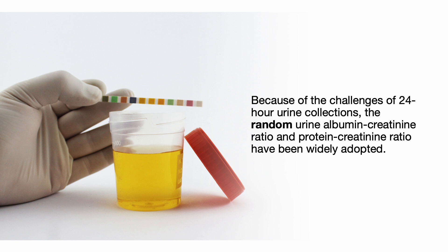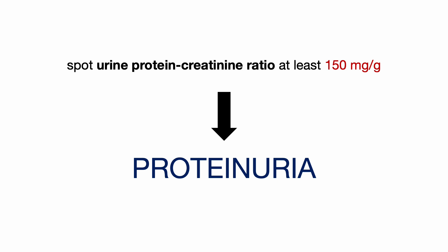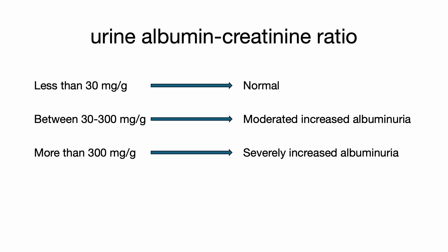Because of the challenges of 24-hour urine collections, the random or spot urine albumin creatinine ratio and protein creatinine ratio have been widely adopted. Proteinuria is defined as a spot urine protein creatinine ratio of at least 150. A spot urine albumin creatinine ratio of less than 30 is normal; 30 to 300 is moderately increased albuminuria, and more than 300 is severely increased albuminuria.